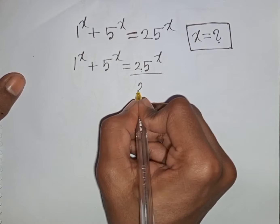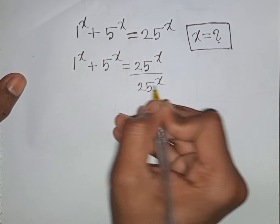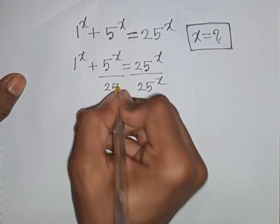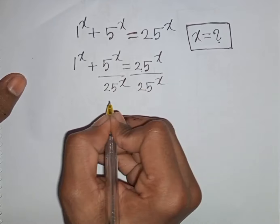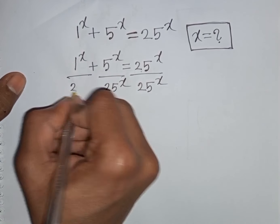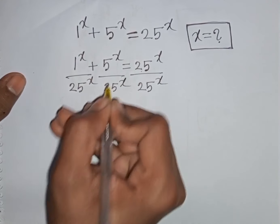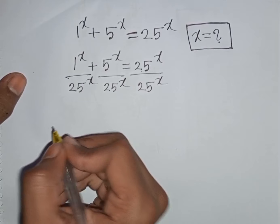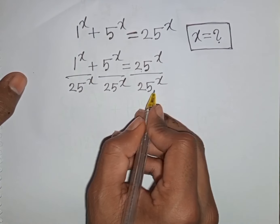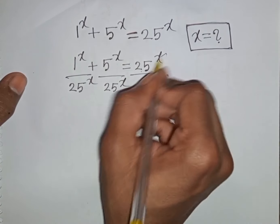Divided by 25^x on both sides. This 25^x and 25^x will be cancelled.